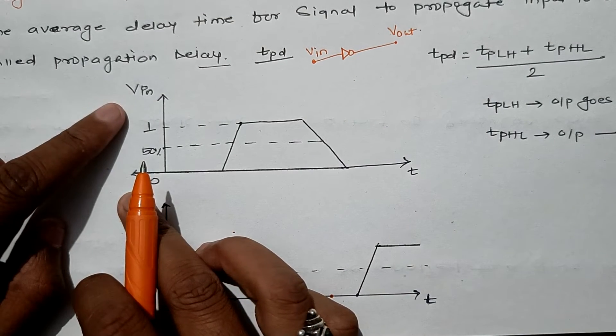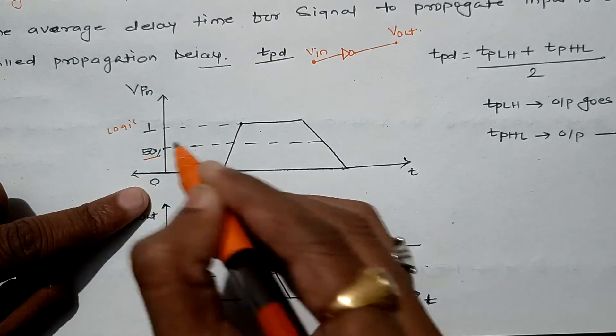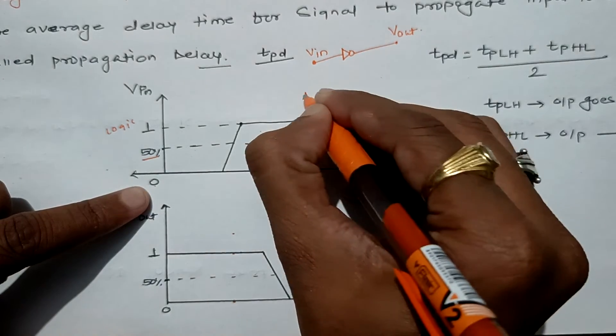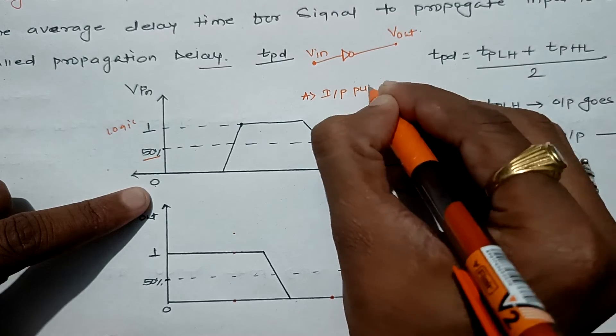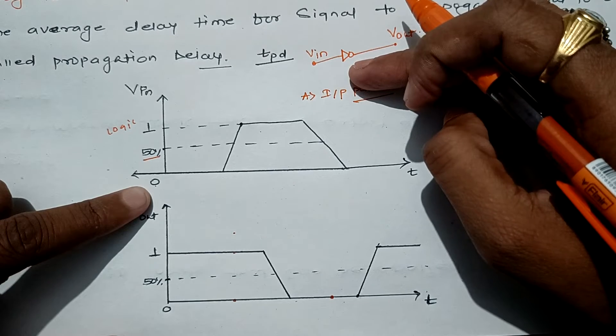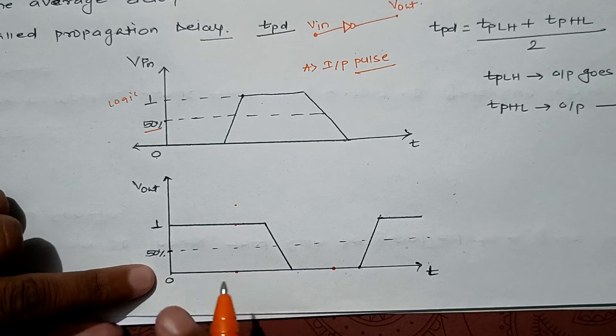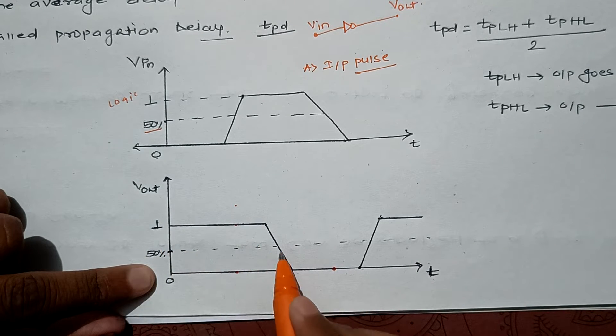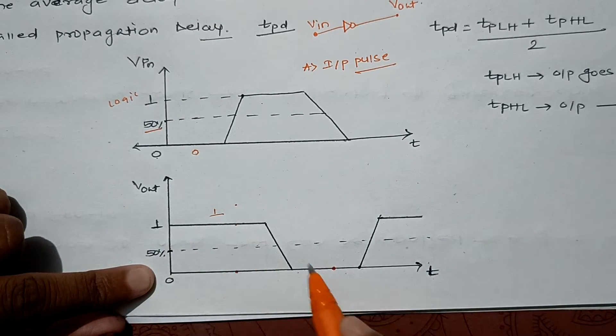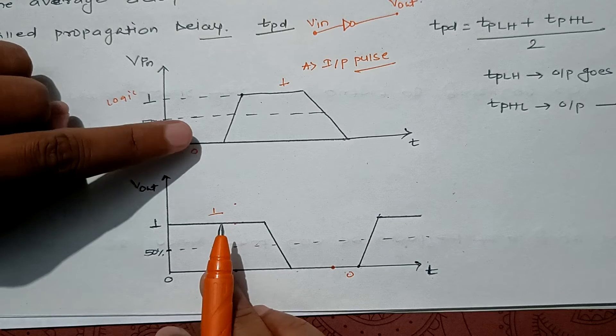Here I have drawn the input signal with voltage. This is logic 0, this is logic 1, and this is 50 percent. This is how our input pulse is applied. When it is applied across this inverter, it may get some delay. So we will be getting the output like this - somewhat delayed and inverted also.